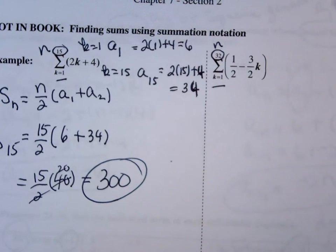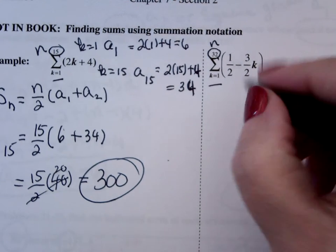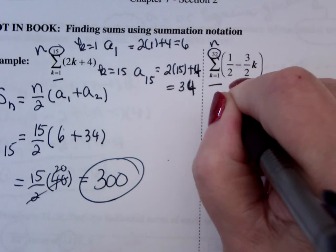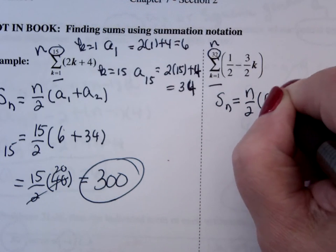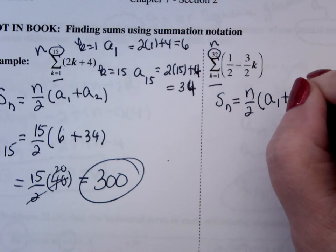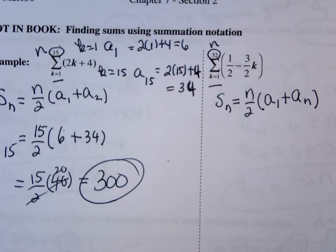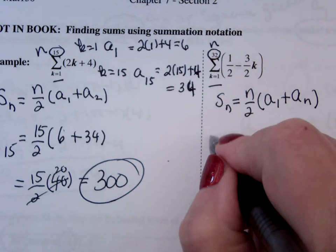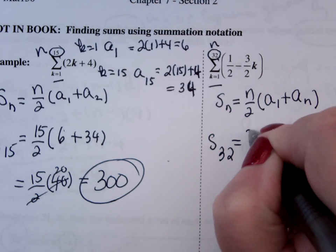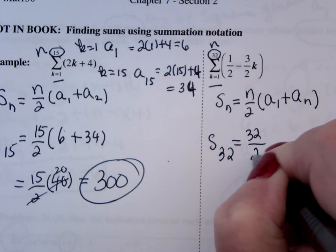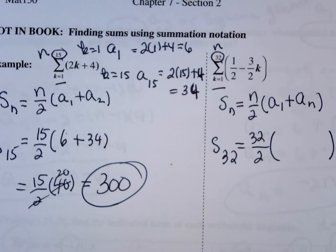Now, this guy's going to go the same route. I know that s of n equals n over 2 times first term plus last term. n is 32, so I'm looking for s of 32 is going to be 32 divided by 2. And now I need to calculate out what's the first and what's the last.